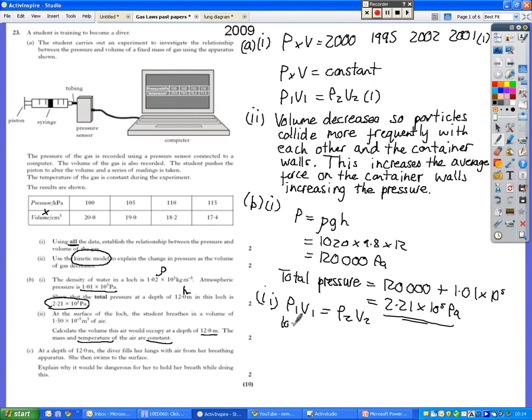P1V1 equals P2V2. So, 1.01 times 10 to the power of 5 times 1.5 times 10 to the negative 3 will be equal to 2.21 times 10 to the power of 5 times V2. You'll get V2 being 6.86 times 10 to the negative 4 meters cubed. Pretty simple.